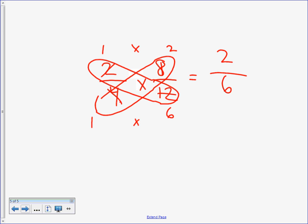Oh, look at that. Can still be simplified. So how do I know they're both even numbers? And I know that 2 goes into itself once. And 2 goes into 6 three times. There's my answer.